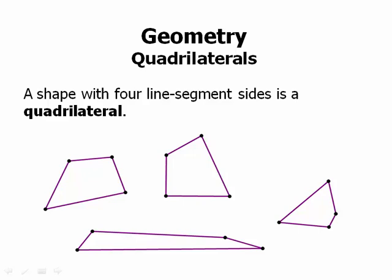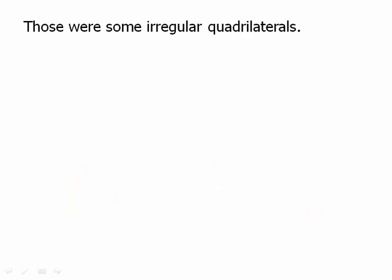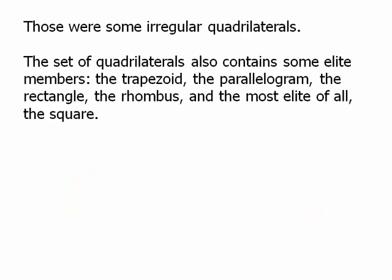Sometimes the test will ask about an irregular quadrilateral, but the test is more likely to ask about the very symmetrical quadrilaterals, and we'll talk about those also in this video. The set of quadrilaterals also contains some elite symmetrical members: the trapezoid, the parallelogram, the rectangle, the rhombus, and the most elite of all, the square.